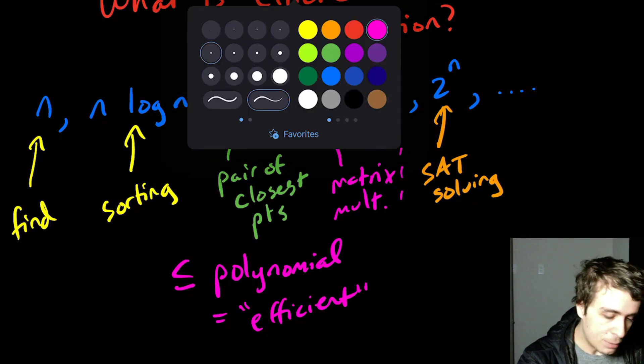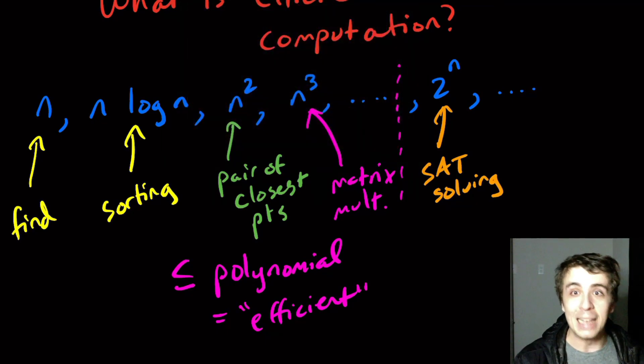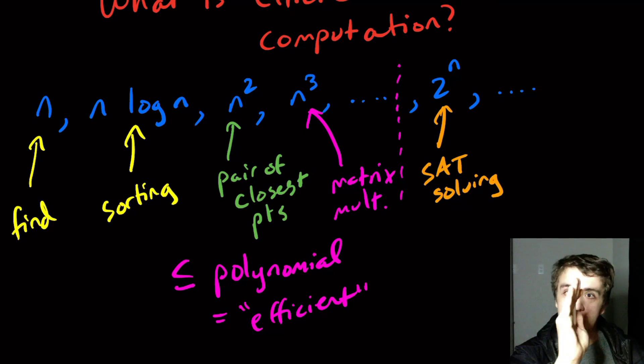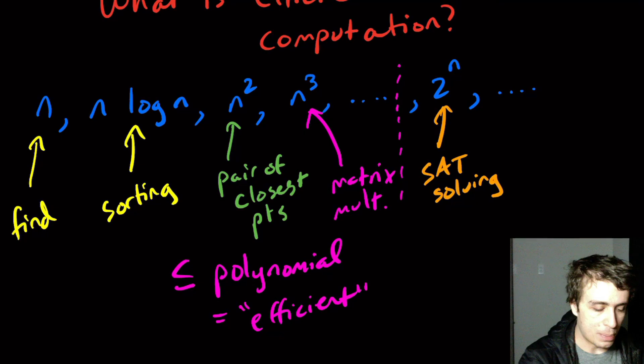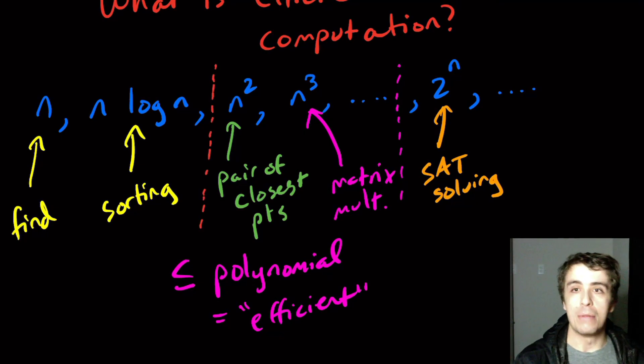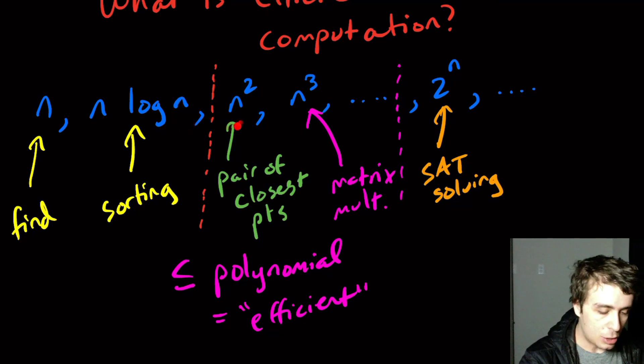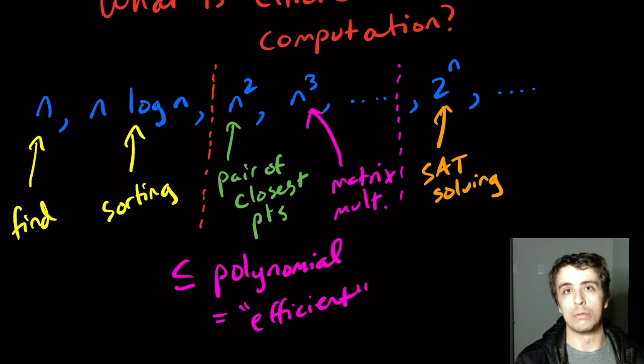But as data becomes more vast, we may want to move this line to the left a little bit. One example is if you submit any algorithm that runs n squared or more time to a compiler like GCC to help compile programs, it will be immediately rejected. So you may want to say if I have an n squared algorithm, that's not efficient really anymore.